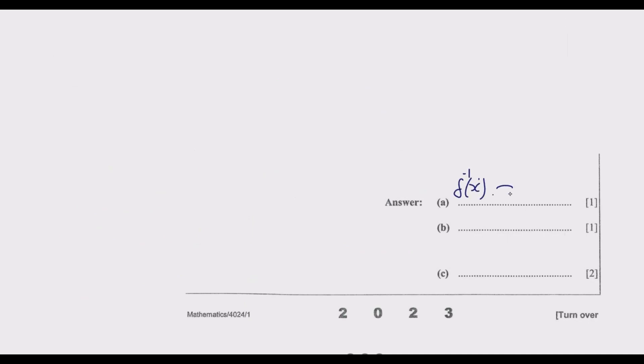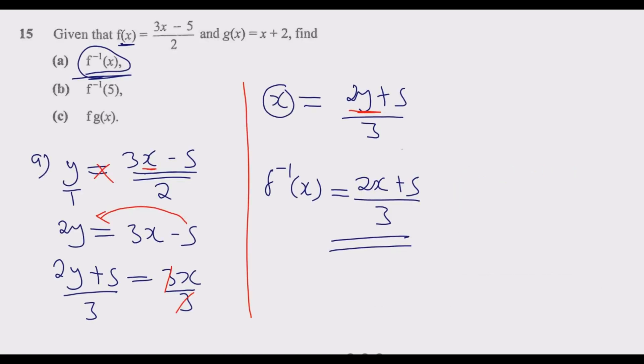We found f^-1(x) = (2x + 5)/3. That's the answer we found. Then (b) we need to find f^-1(5). So now in this function, wherever there is x, we would place in a 5, then we find the value.